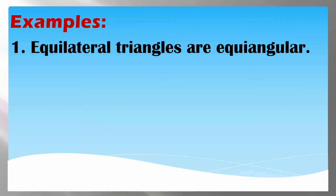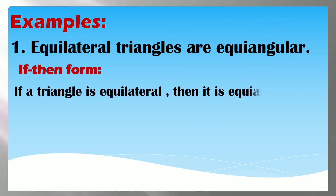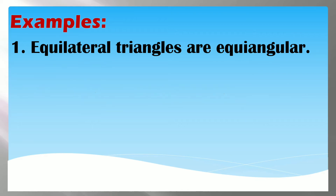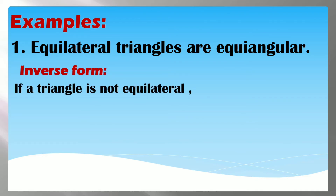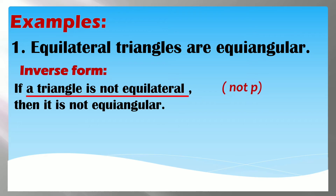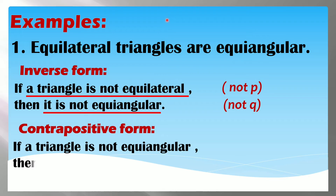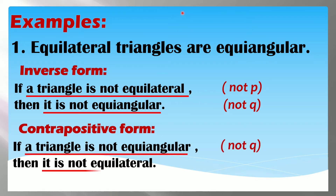Try natin sa examples. 'Equilateral triangles are equiangular.' Ang if-then form: if a triangle is equilateral, then it is equiangular. Ito yung ating hypothesis, ito yung ating conclusion. Gagawin nating inverse — lalagyan ng 'not' both the hypothesis and the conclusion. Ang inverse form: if a triangle is not equilateral, then it is not equiangular — not P, not Q. Ngayon dahil contrapositive ang pinag-uusapan, pagbabaliktarin lang natin itong dalawang statement. Magiging: if a triangle is not equiangular, then it is not equilateral — not Q, not P. Yan po yung contrapositive.